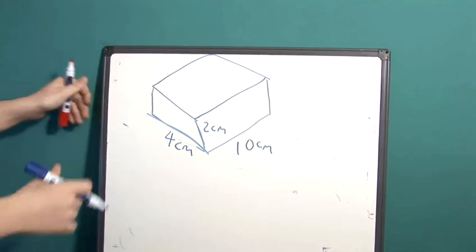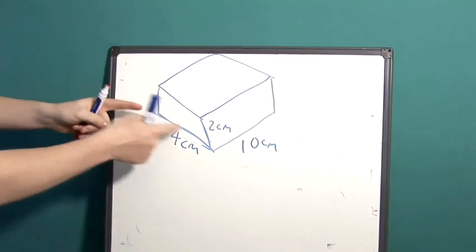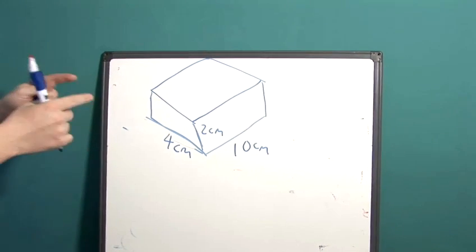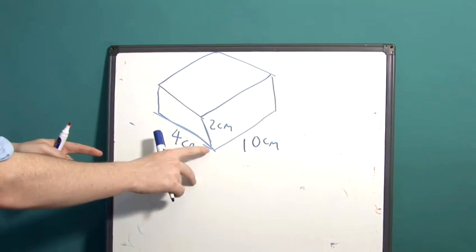To work out the volume of this object now, what we first need to do is work out the area of the face shape here, which is a rectangle. We know that the area of a rectangle is length multiplied by width, either way.